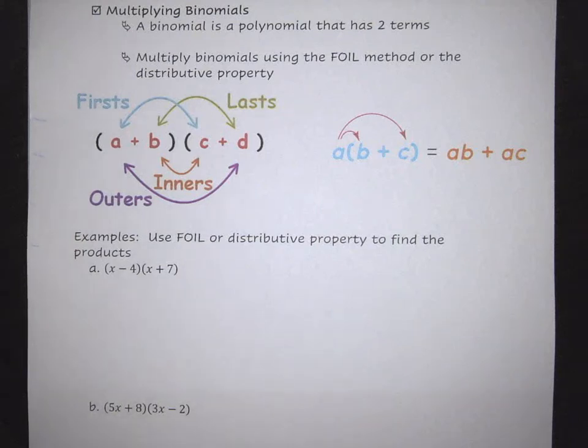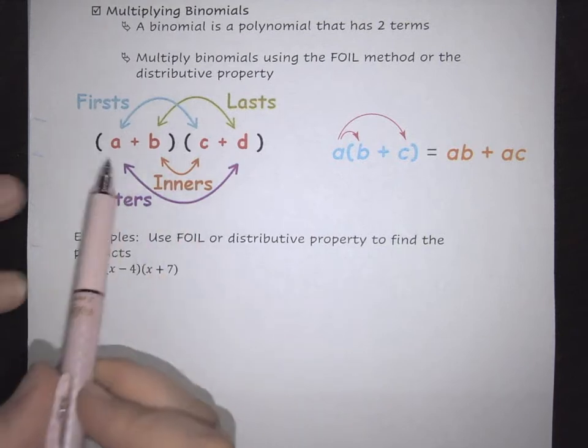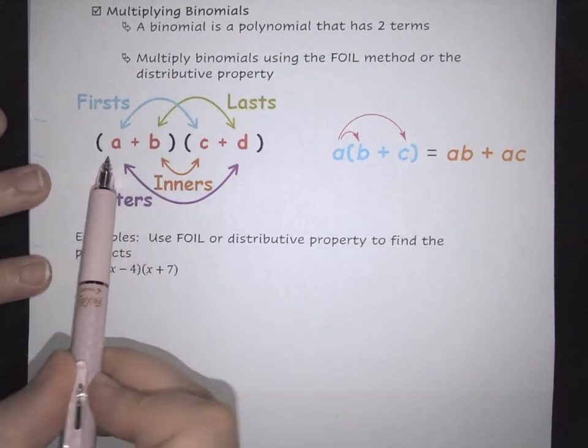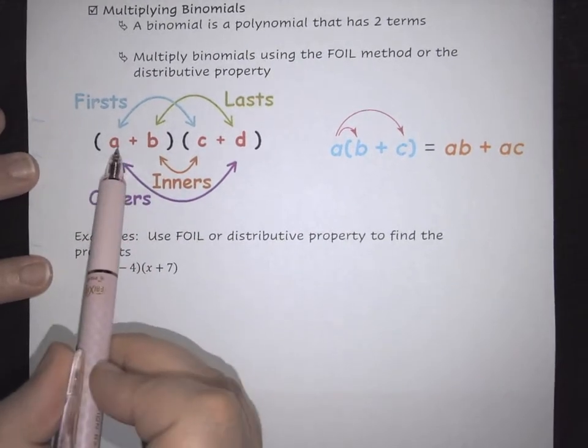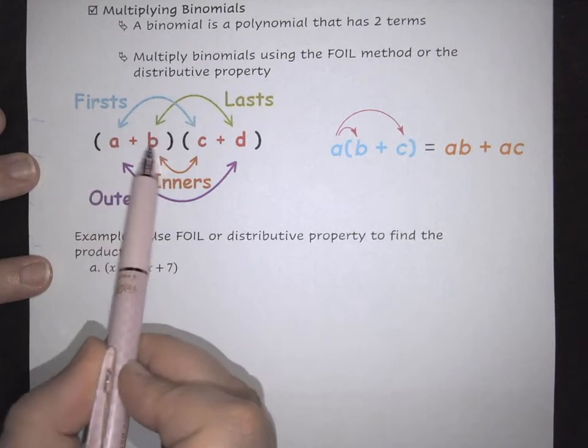Here we're going to look at a couple examples on how to multiply binomials. Binomials is a polynomial that has two terms. Most of the time you see them in parentheses where you have the first term plus or minus the second term.